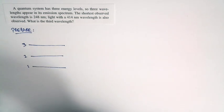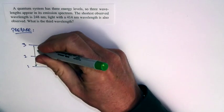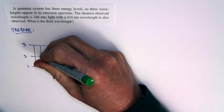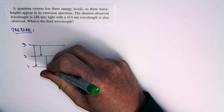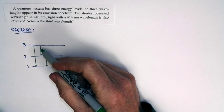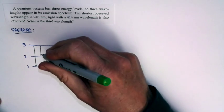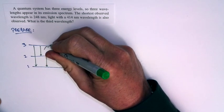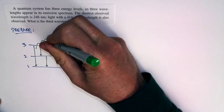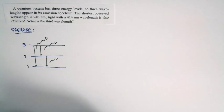If I have three possible energy levels, that means I have three possible transitions. An electron could fall from state three down to state one, could fall from state three to state two, or it could fall from state two down to state one. So if I'm looking at the emission spectrum, which corresponds to electrons falling from upper states into lower states, there are three possible wavelengths that I expect.